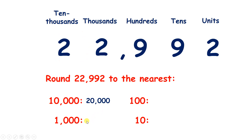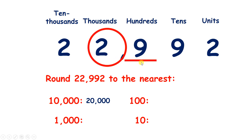Now rounding to the nearest 1,000, we find the place, look next door — it's 5 or more, so we raise the score: that 2 will become a 3. Then we put zeros to the right, so we have 23,000.